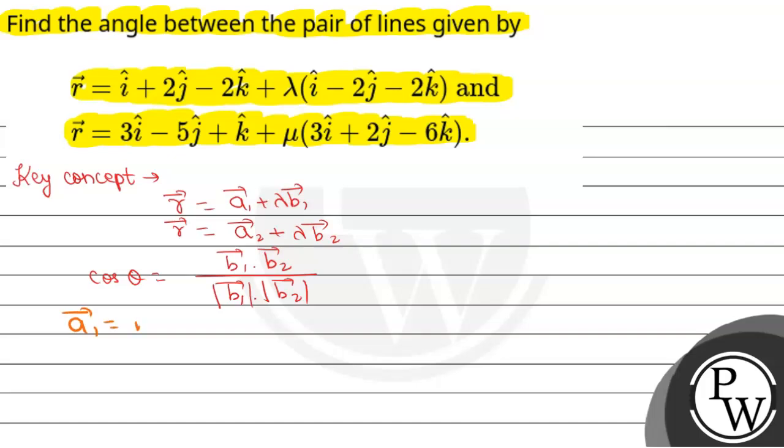Here we have vector a1 is i cap plus 2 j cap minus 2 k cap.